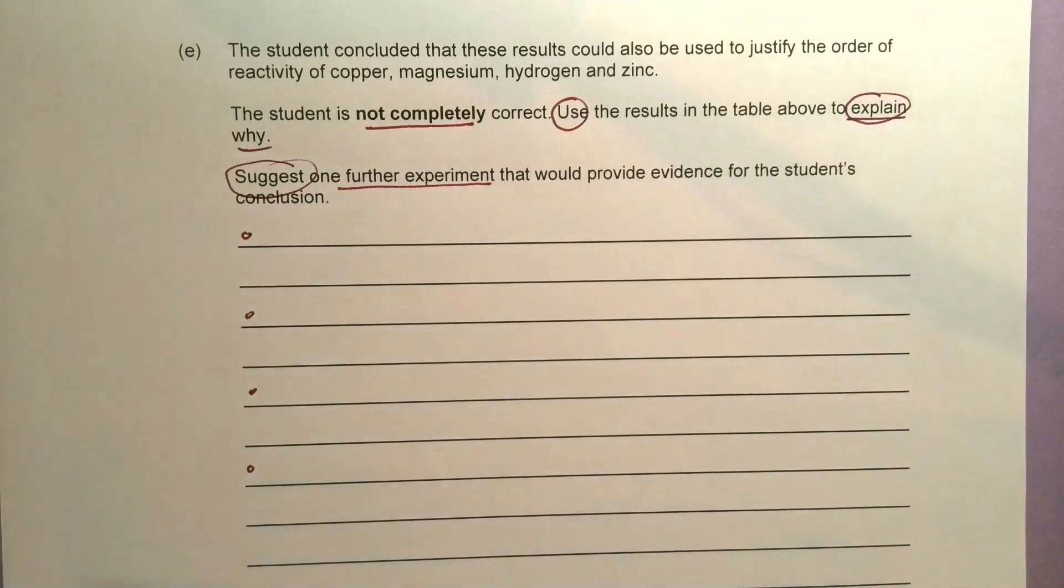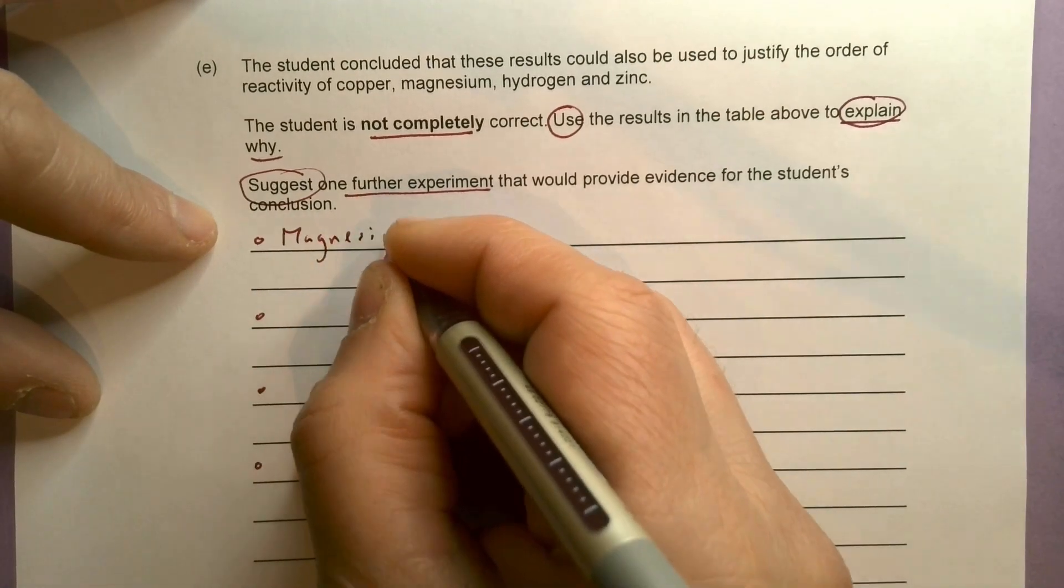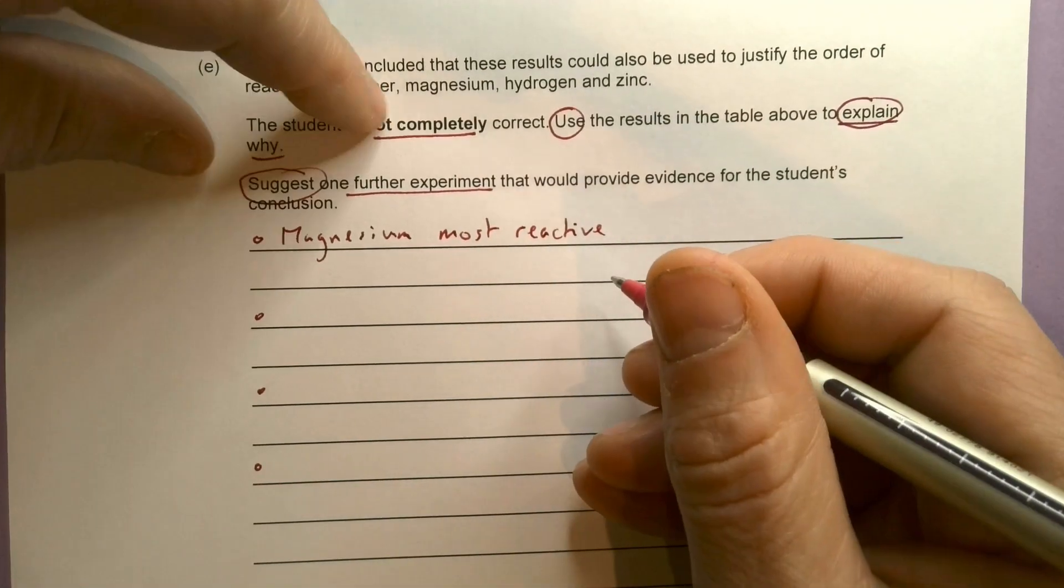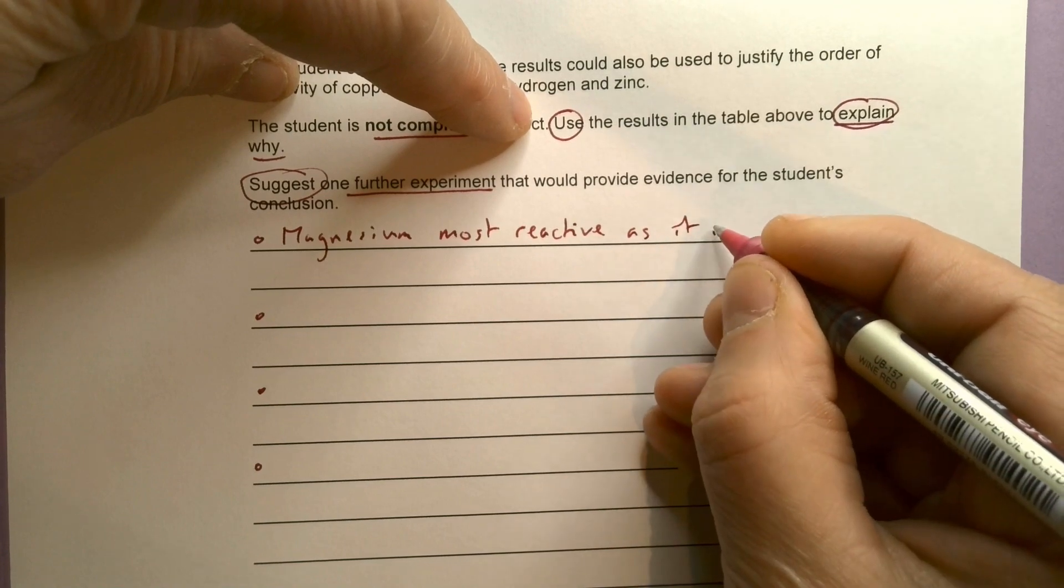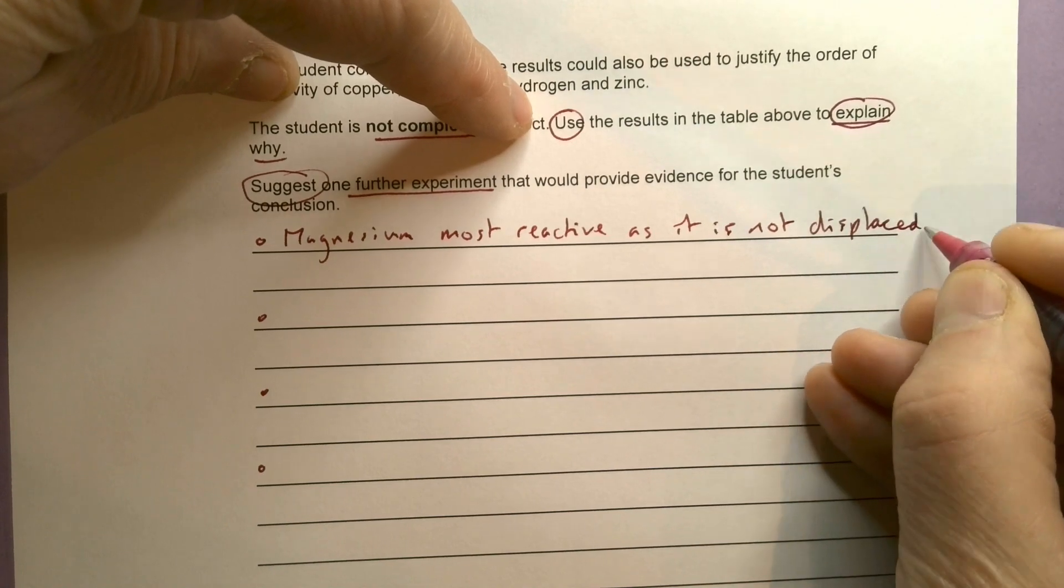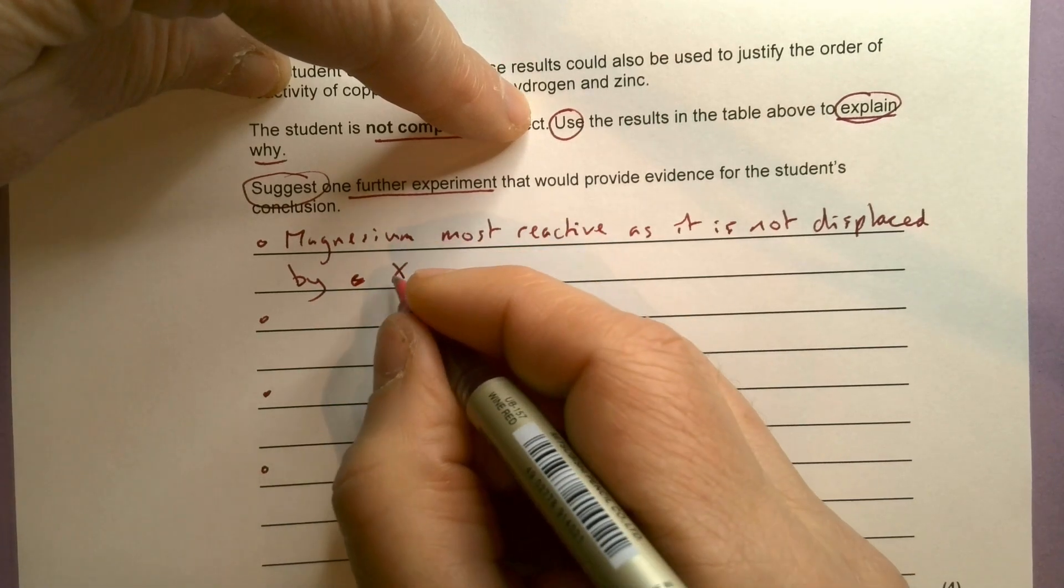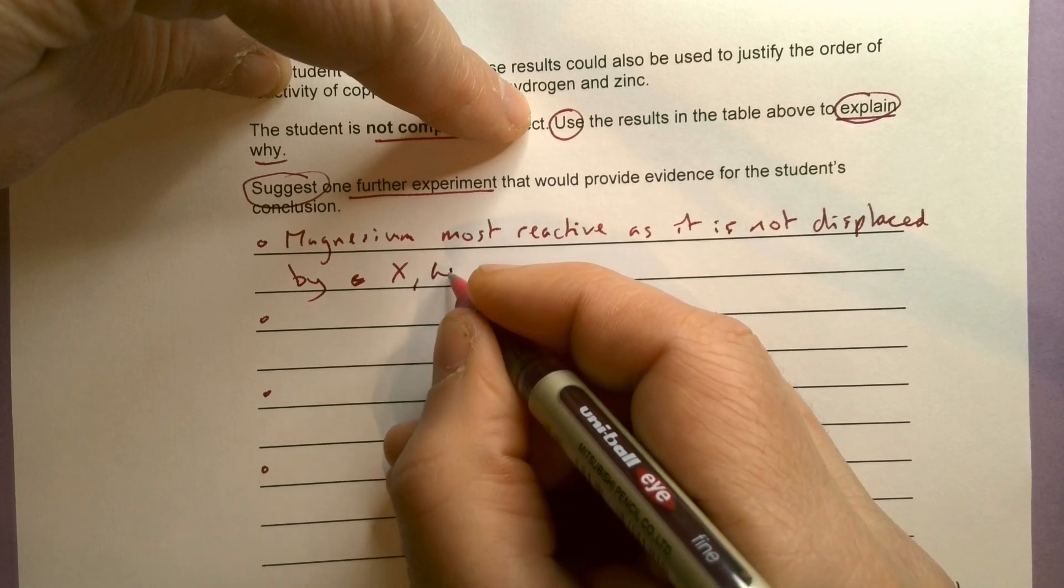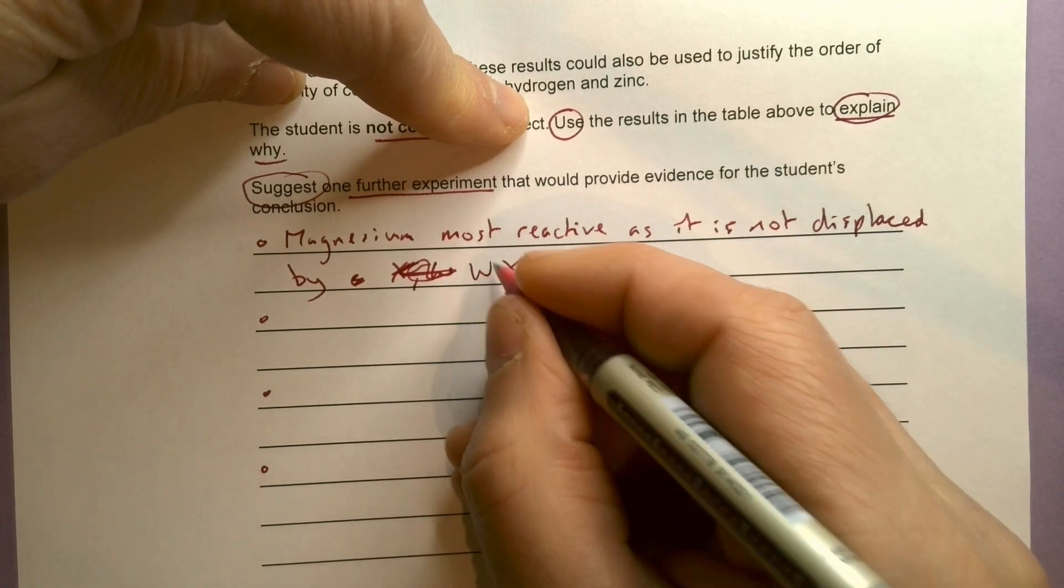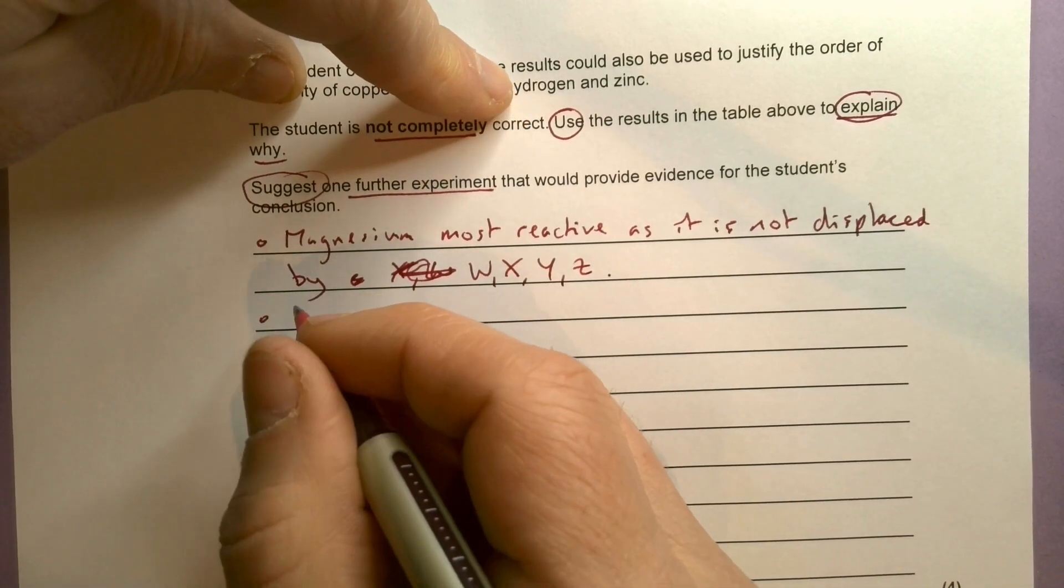What do we know? We know magnesium is the most reactive. Magnesium most reactive as it's not displaced by W, X, Y, and Z. We know that zinc is the second most reactive.